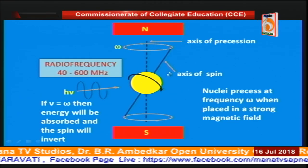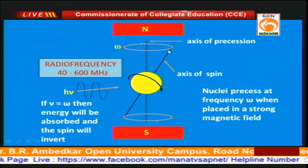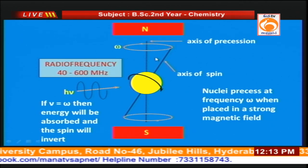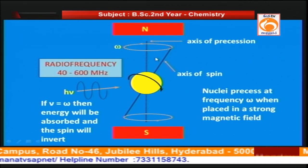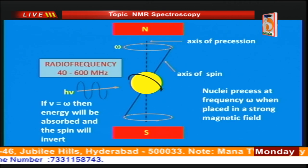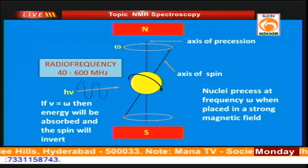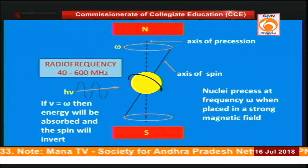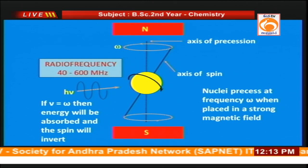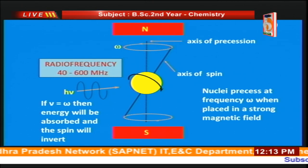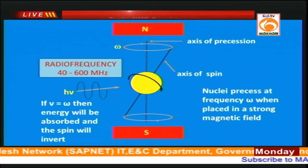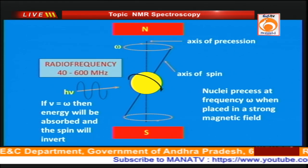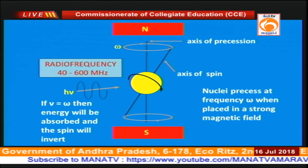The axis of spin and the axis of precession are as indicated in the diagram. Like a precessing top, the proton in the presence of a strong magnetic field will undergo precession, and the precessional frequency is given by ω. Whenever the precessional frequency equals the applied frequency, the resonance phenomenon occurs and the proton in the alpha state will undergo a transition to the beta state.